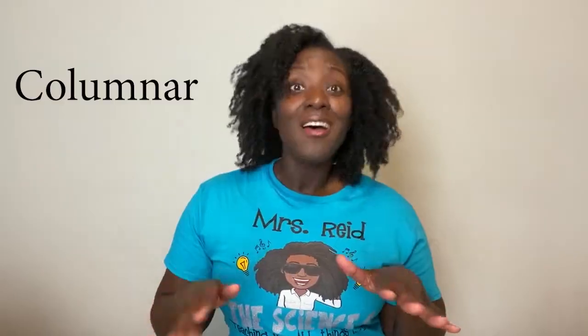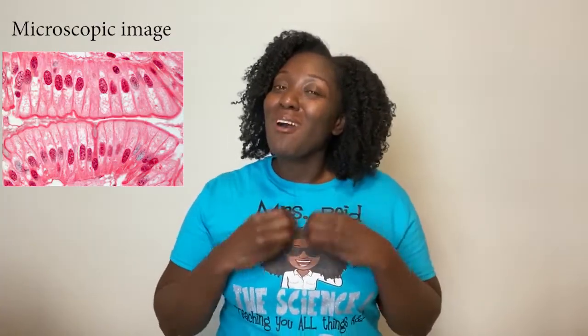Lastly, we have columnar. Columnar cells look like a column. When I visited Greece, I was able to see some amazing architecture — the column is extremely prominent in ancient Greek architecture. So when I think of columnar tissue, it reminds me of columns. I didn't get to travel anywhere this year, so I guess my fence will be my columns this year.